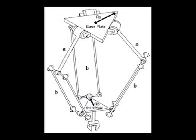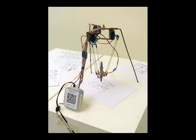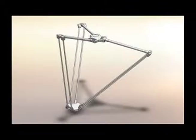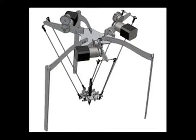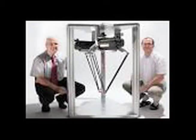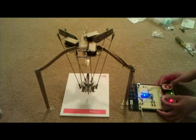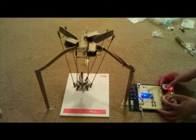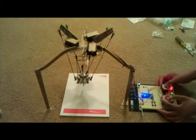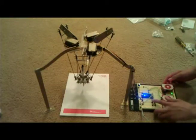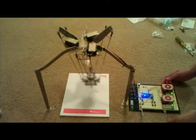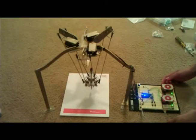Delta robots have popular usage in picking and packaging in factories because they can be quite fast, some executing up to 300 picks per minute. The Delta robot was invented in the early 1980s by a research team led by Professor Raymond Clavel. The purpose was to manipulate light and small objects at very high speed, an industrial need at the time. In 1987, the Swiss company Demaurex purchased a license for the Delta robot and started production for the packaging industry.